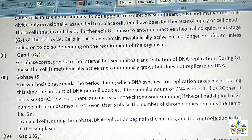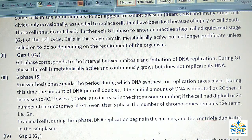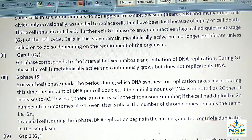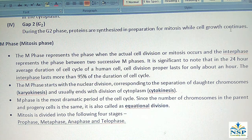S phase, or synthesis phase, marks the period during which DNA synthesis or replication takes place. During this time, the amount of DNA per cell is doubled. If the initial amount of DNA is denoted as 2C, then it increases to 4C. However, there is no increase in chromosome number — if the cell had a diploid or 2n number of chromosomes at G1, even after S phase the number of chromosomes remains the same, that is 2n. In animal cells during S phase, DNA replication begins in the nucleus and the centriole duplicates in the cytoplasm. During G2 phase, proteins are synthesized in preparation for mitosis while cell growth continues.